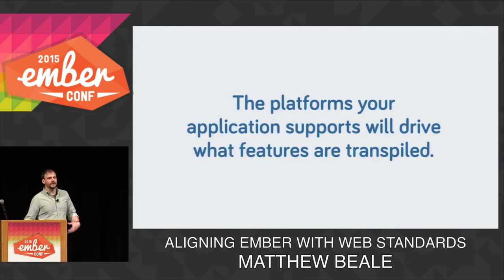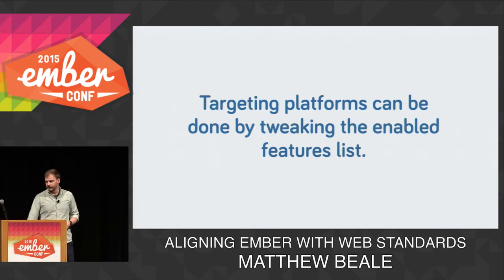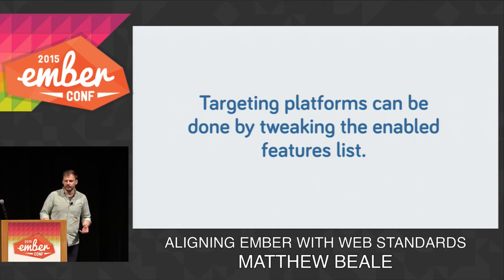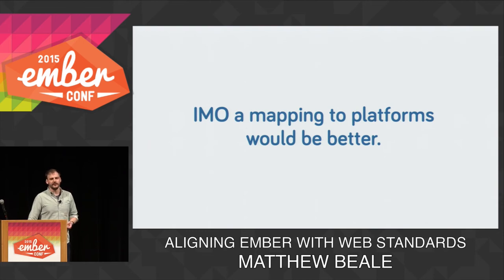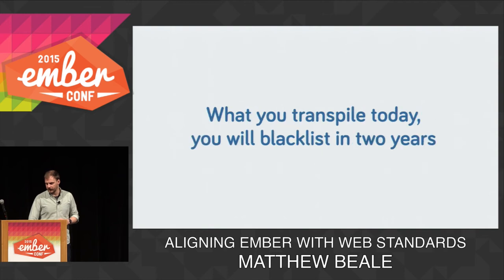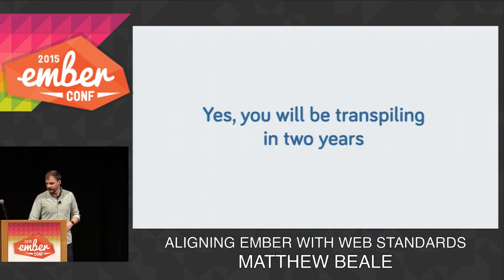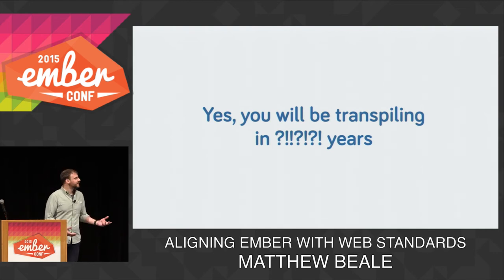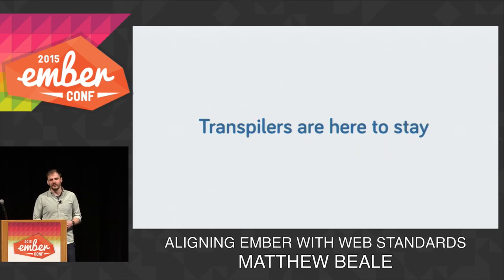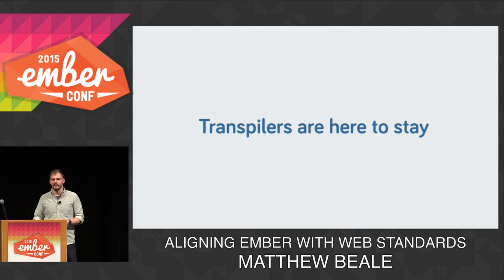What I hope we can do more in the future with Babel is get a more flexible tool where we can focus on what features are actually being transpiled. You can do this now — there's a blacklist where you can say you don't want certain features transpiled. A mapping to platforms would be simpler — you should be able to say I want to support the last two modern browsers and it will just throw away things you don't need to transpile. In two years you'll probably be using Babel. Even in five years, maybe in ten, I think this tool is going to be around for a really long time and we should continue to put effort into it and contribute things back upstream as we need them to work in Ember.